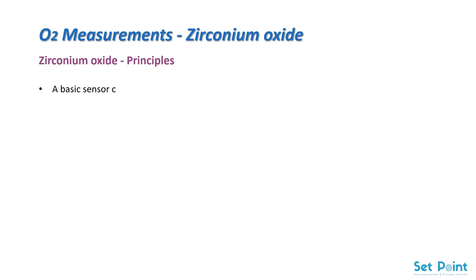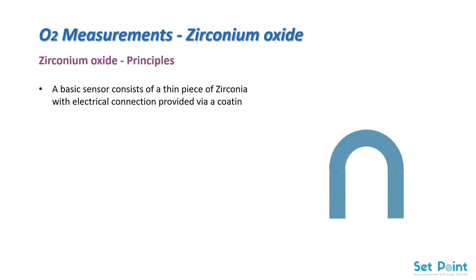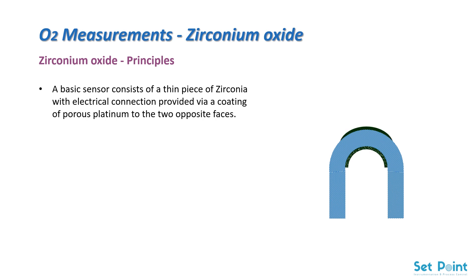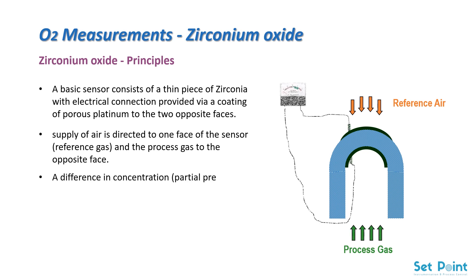A basic sensor consists of a thin piece of zirconia with electrical connections provided via a coating of porous platinum to the two opposite faces. A supply of air is directed to one face of the sensor as a reference gas, and the process gas to the opposite face. A difference in concentration — partial pressure — of oxygen on each side of the zirconia produces a millivolt signal.